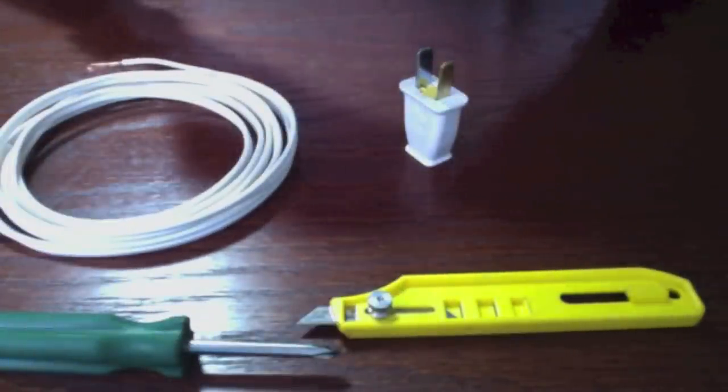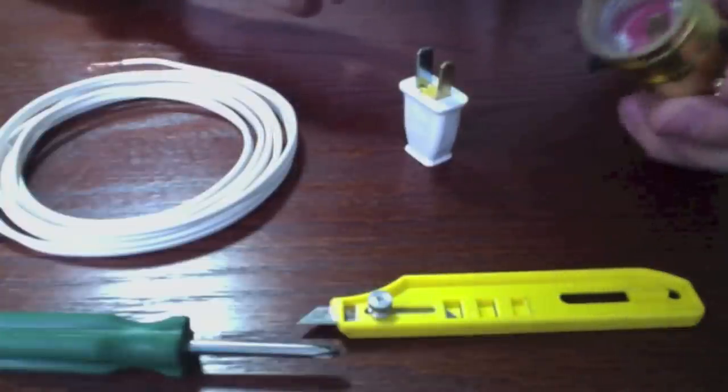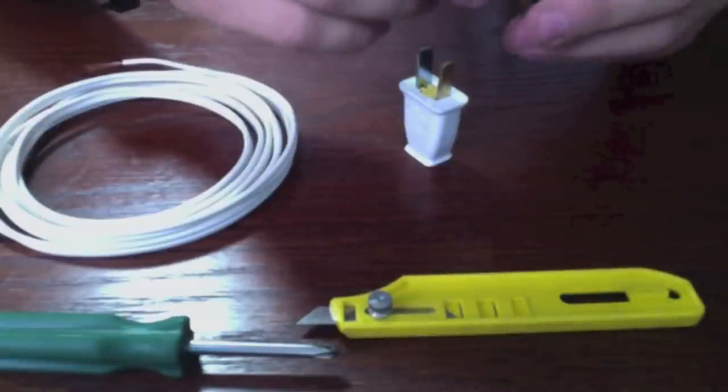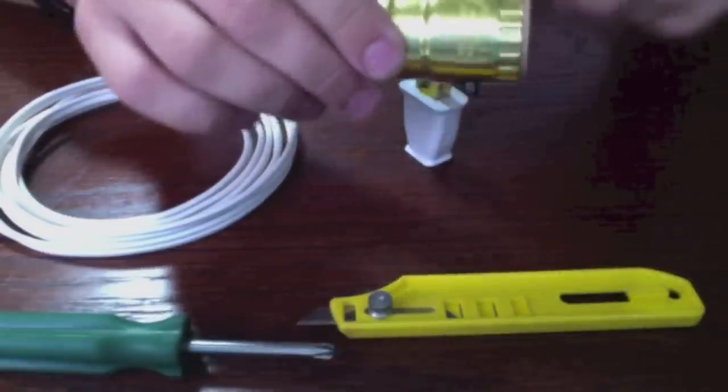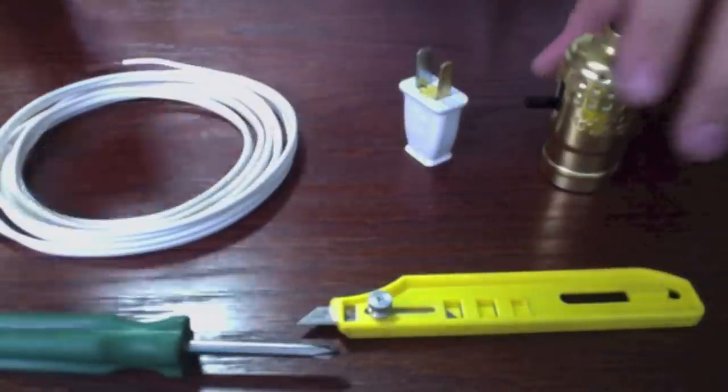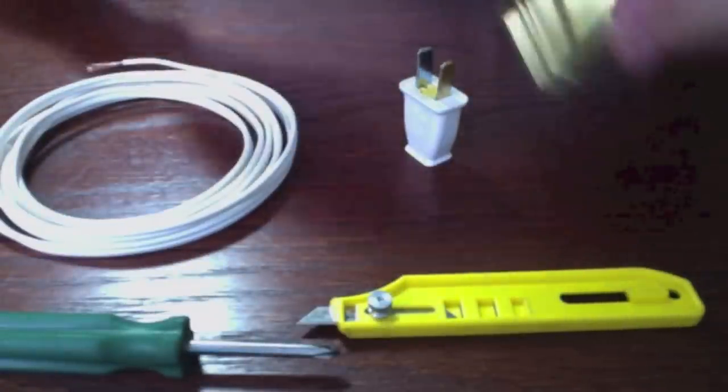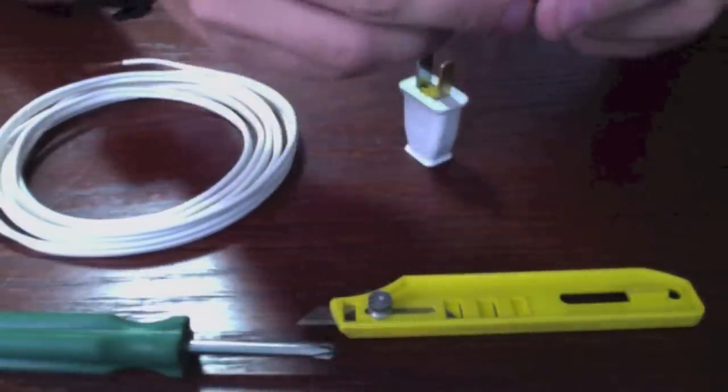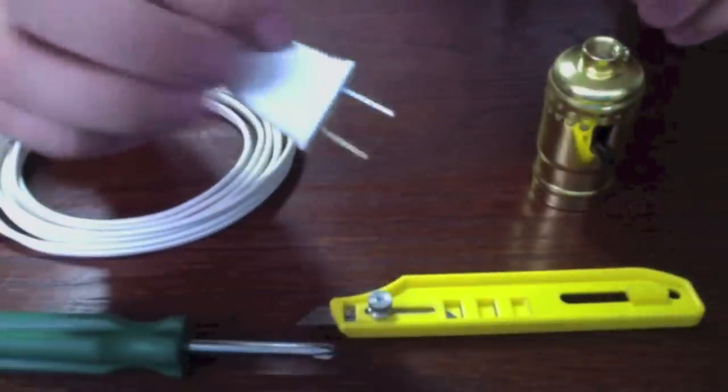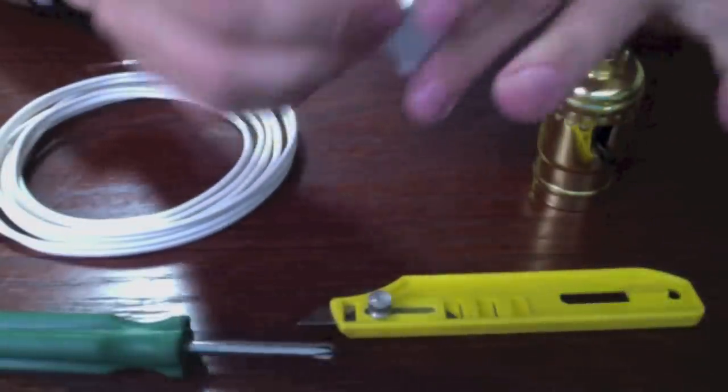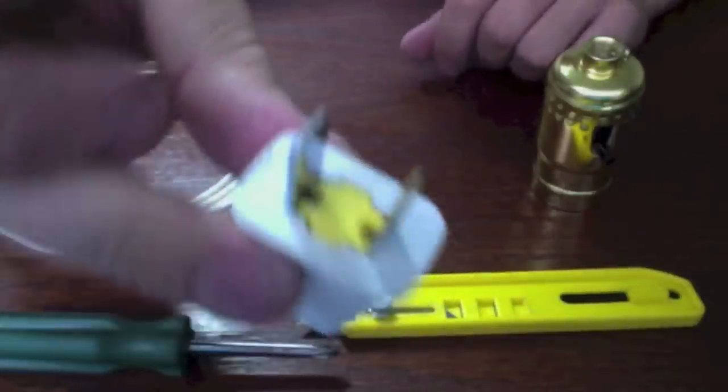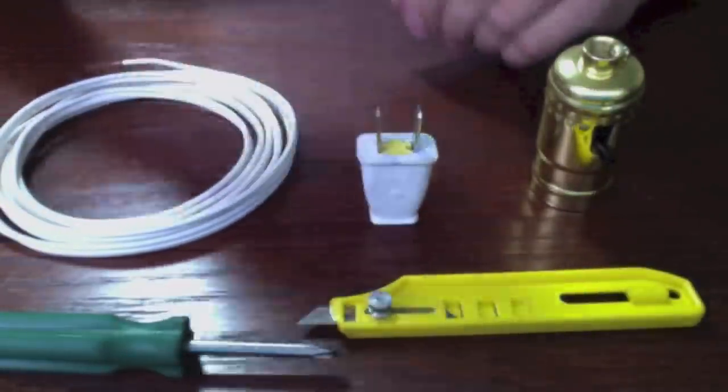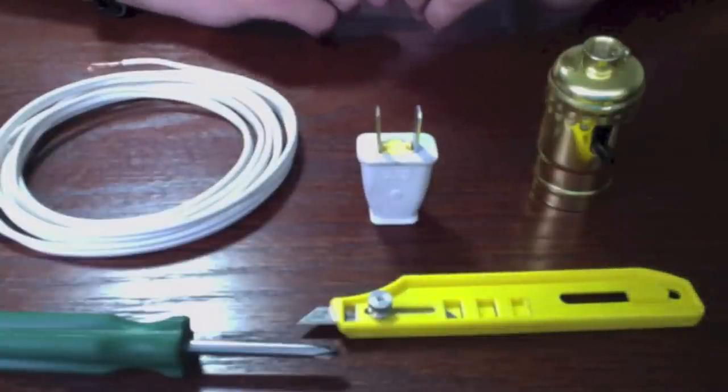You need some sort of housing for the bulb, the socket. You can buy these at a hardware store or probably find them online. Some come with these switches, some are pull, some just come where if you unplug it from the wall it will turn on and off. There's a different variety. Make sure that you can take it apart like this. Another thing you'll need is this guy right here, standard. And you want to be able to remove the prongs so that you can get inside and attach the wire. There are all sorts of different types of those as well.